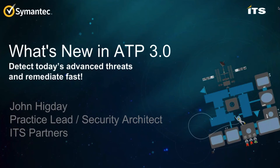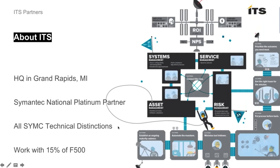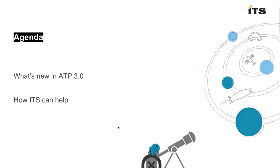Welcome to what's new in ATP 3.0. ATP 3.0 was released today by Symantec with some very exciting new features. ITS Partners is headquartered in Grand Rapids, Michigan. We are a Symantec national platinum partner, holding all Symantec technical distinctions, and we work with the top 15% of Fortune 500 companies. We cover systems, service, asset, and risk management. Our agenda today is to talk about what's new in ATP 3.0 — Advanced Threat Protection — and how ITS can help you going forward.